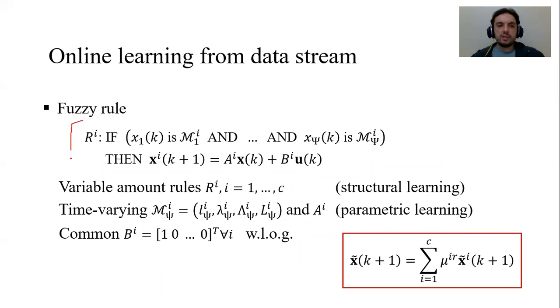Our fuzzy model developed from scratch has rules of this type. The antecedent terms of the rule are trapezoidal membership functions, which form fuzzy hyperboxes in the phase plane. The consequence of the rule contains a linear state-space model. Everything here is variable over time. The amount of rules, the membership functions M, the system matrix A^i.